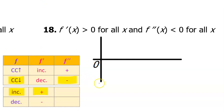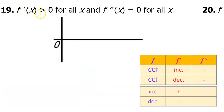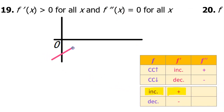So for number eighteen we need to draw a function that is increasing but concave down — something like this would work. For number nineteen, f prime is greater than zero for all x, and f double prime is equal to zero for all x. If f prime is positive, the function is increasing. What about f double prime being zero? If f double prime is zero, it is neither positive nor negative, meaning the original function is neither concave up nor concave down. So we just need to draw an increasing function that is linear — that way it will be neither concave up nor concave down, but it is increasing.